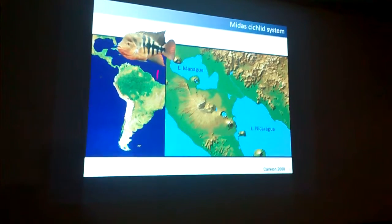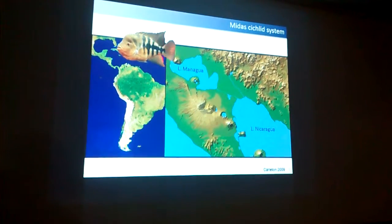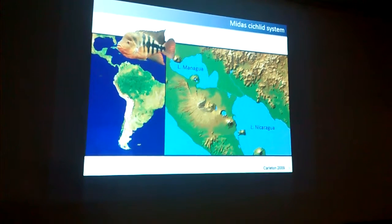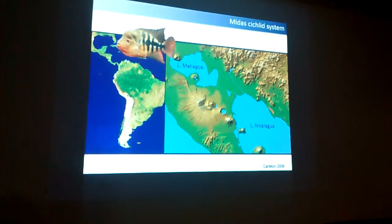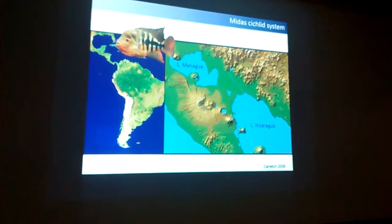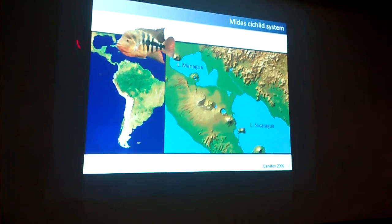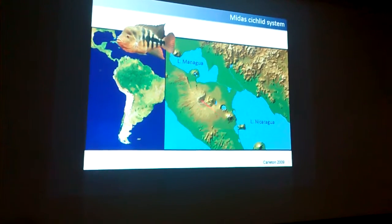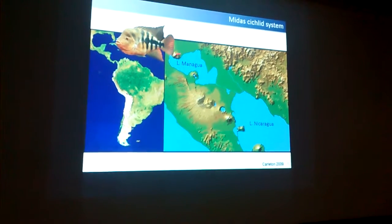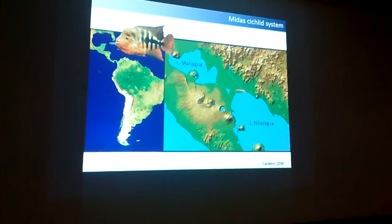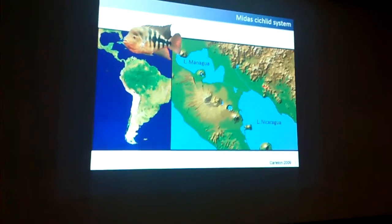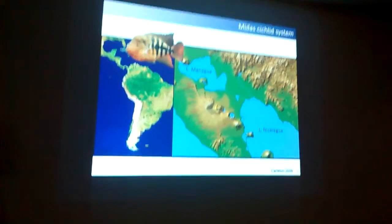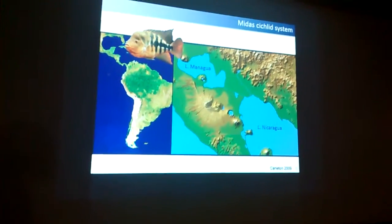Nicaragua has two great freshwater lakes, and they are the source of Midas cichlids that have colonized multiple crater lakes along the border of these great lakes. The two great lakes are connected by a river, there is a lot of gene flow, and there is very little genetic differentiation between them.